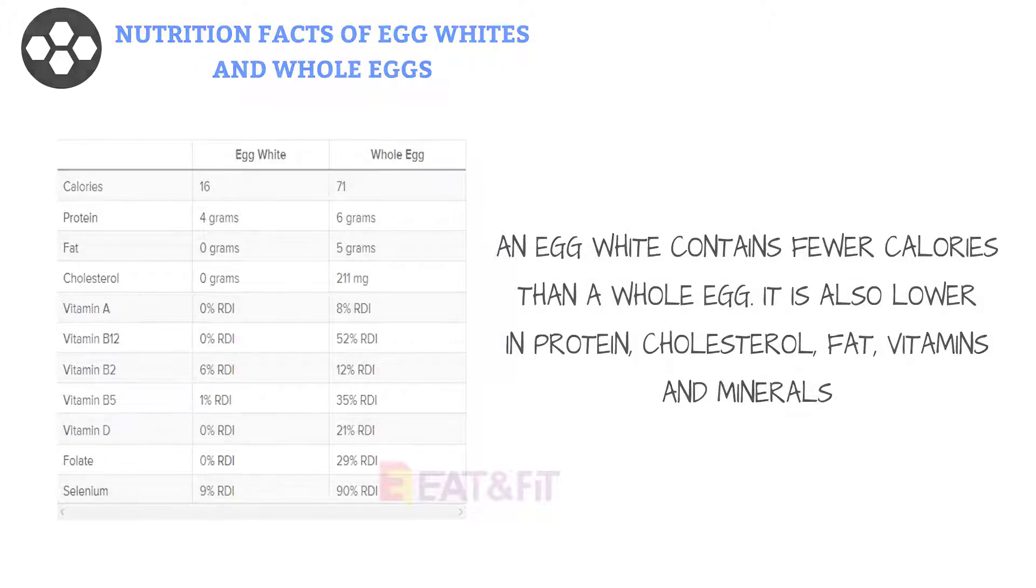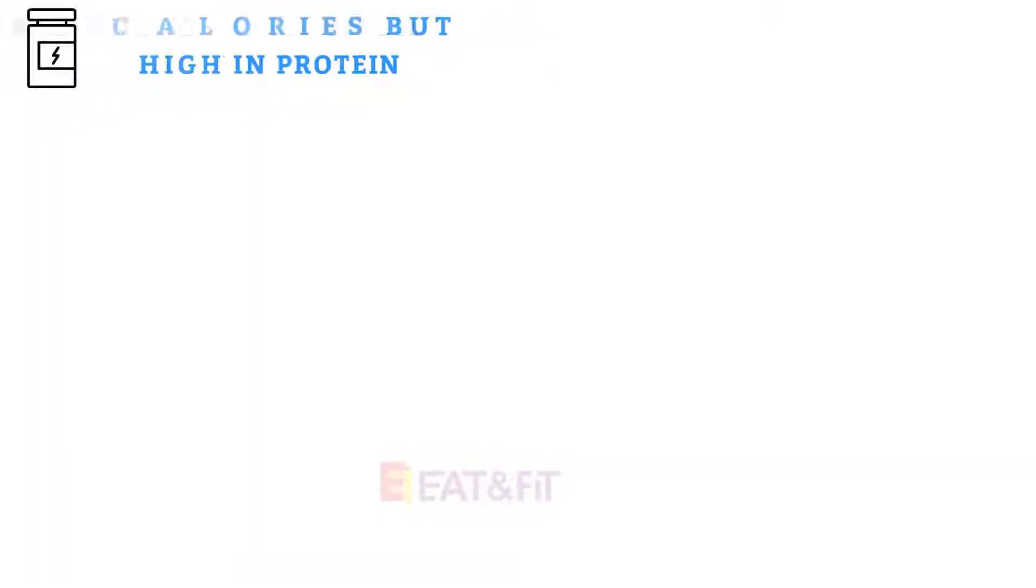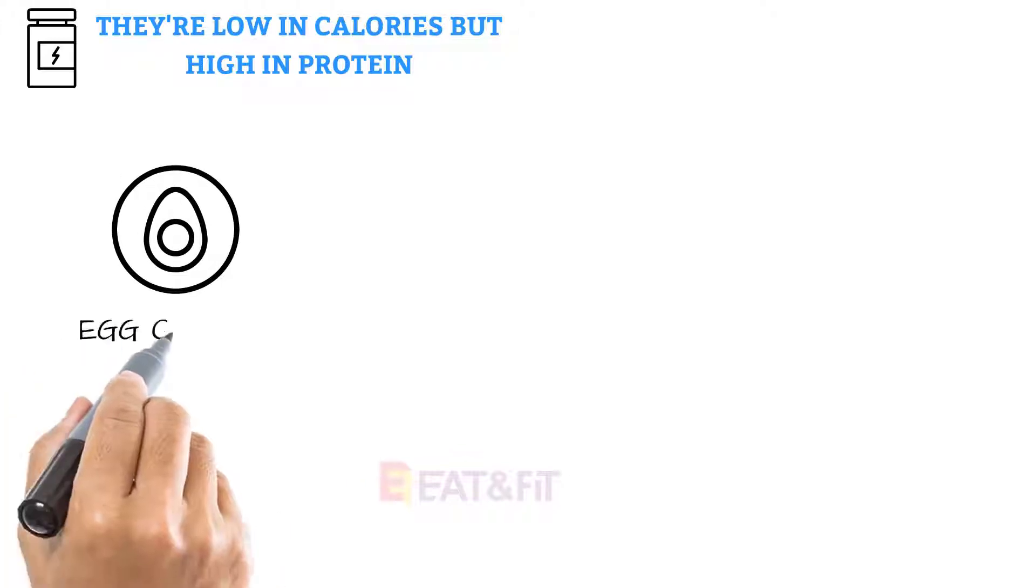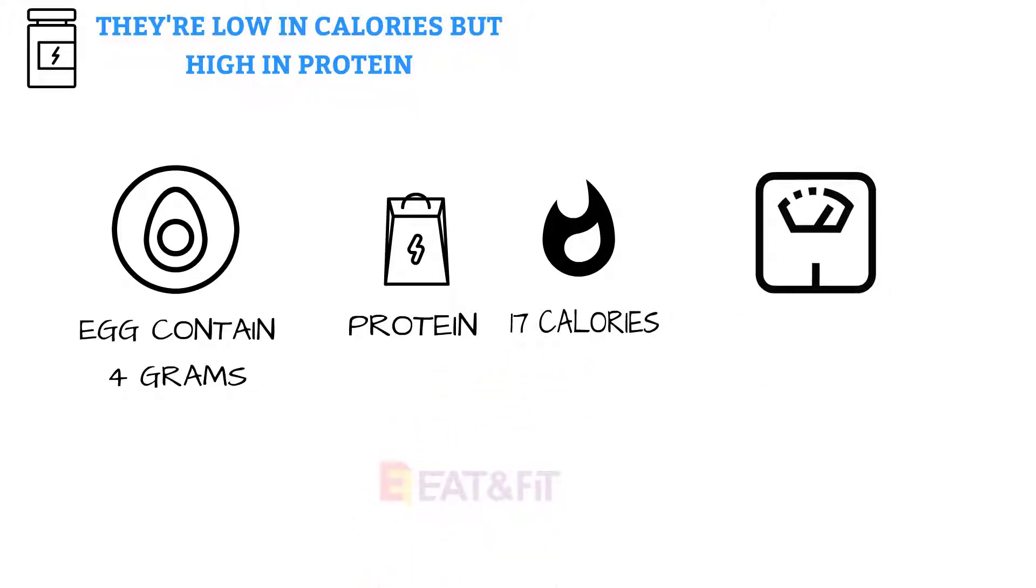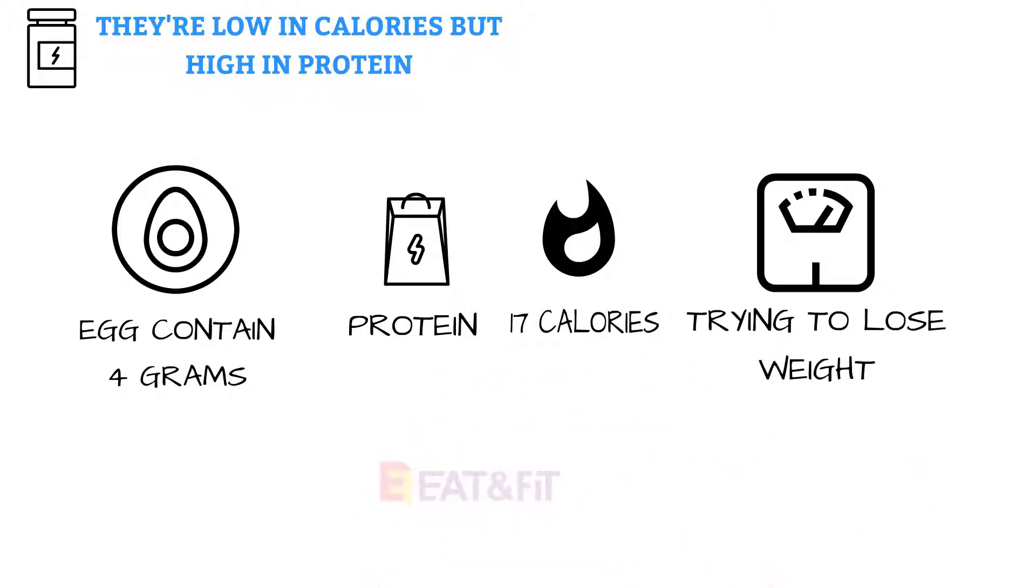Egg whites are low in calories but high in protein. The egg whites from a large egg contain 4 grams of protein and only 17 calories. This can make them a good food choice for people trying to lose weight.